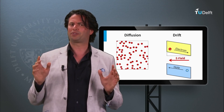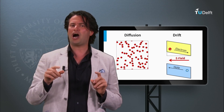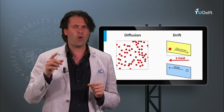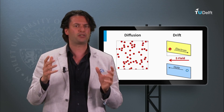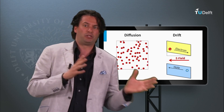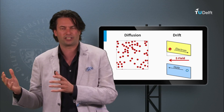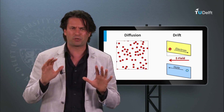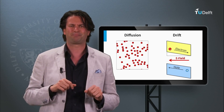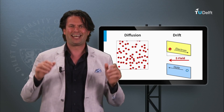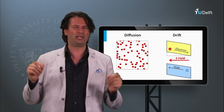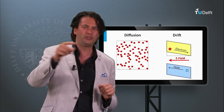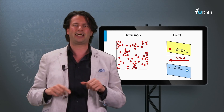So now we know how to excite charge carriers, how to manipulate the semiconductor material to create majority and minority charge carriers, and we understand the transport mechanisms of charge carriers. It is time to build a solar cell using these tools, which we will do in the next block.